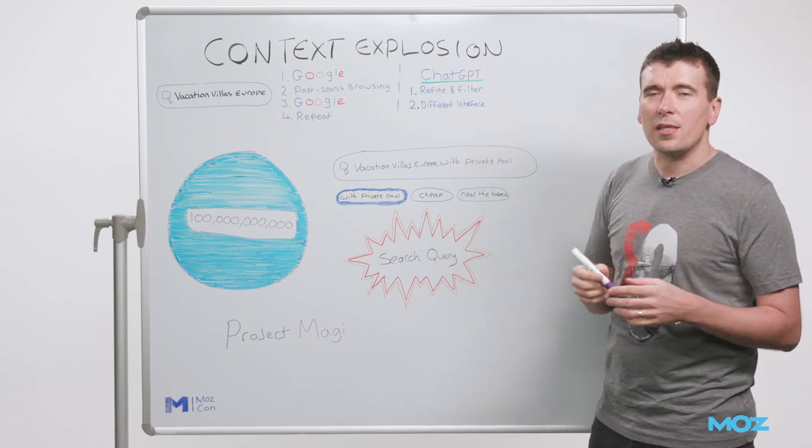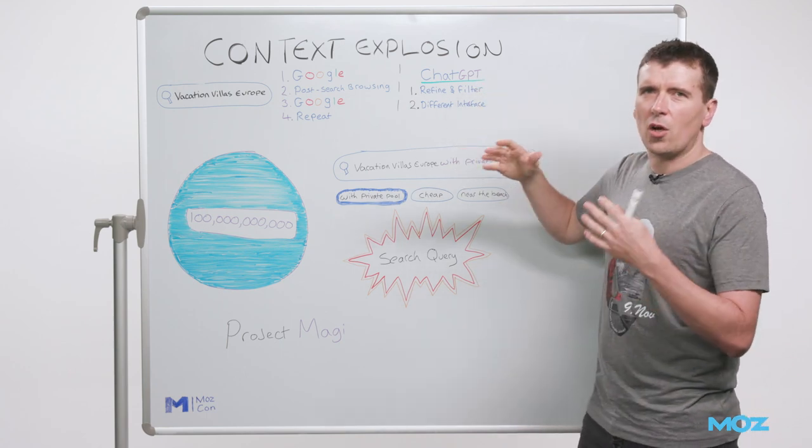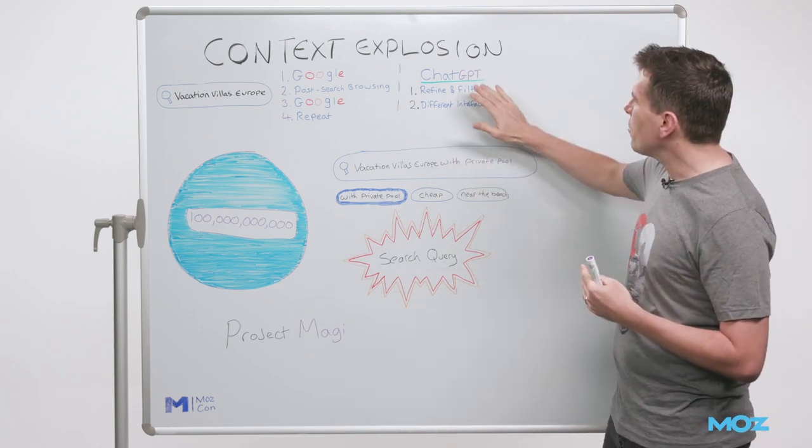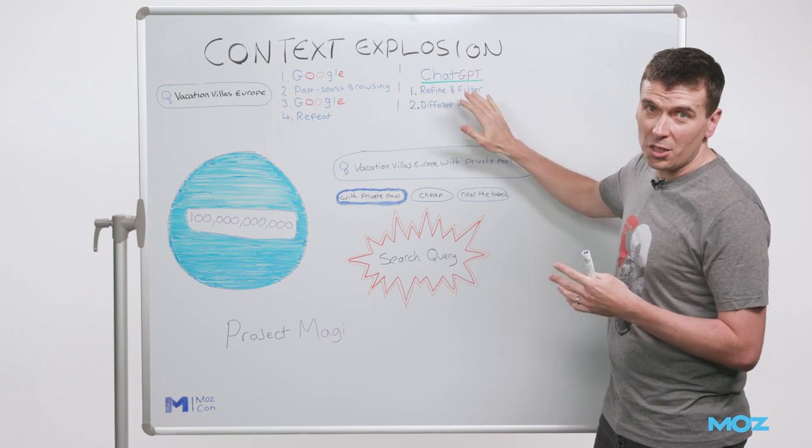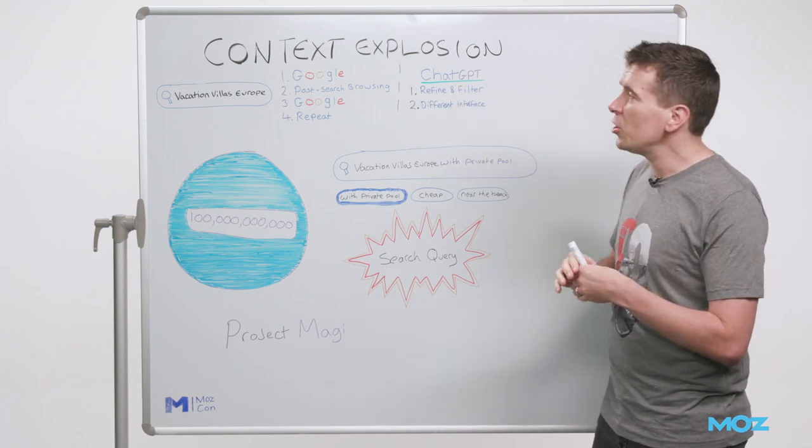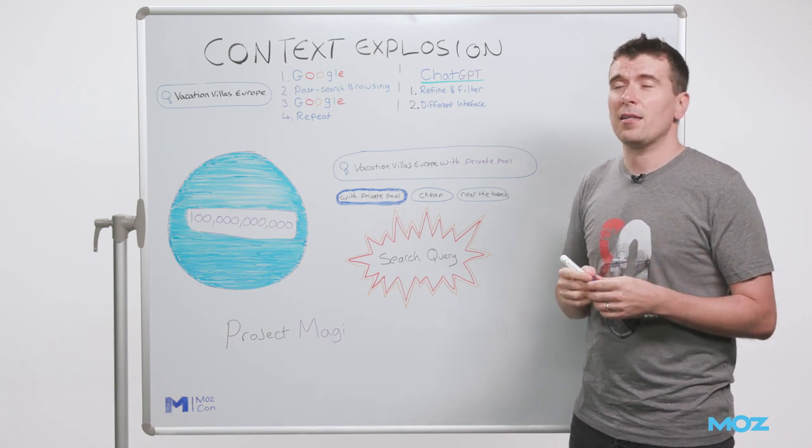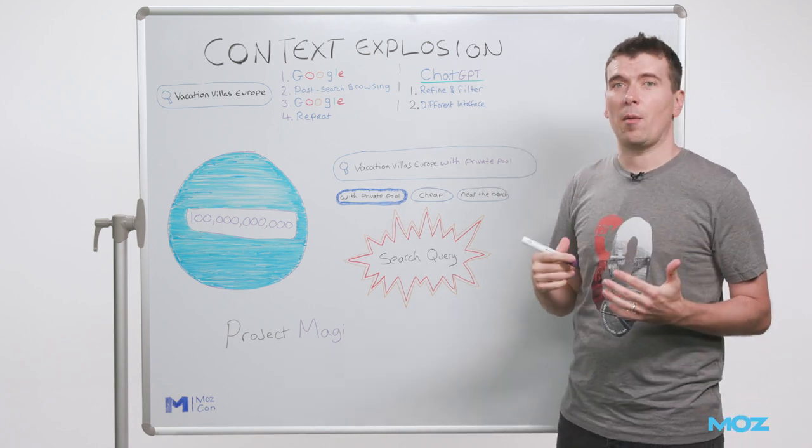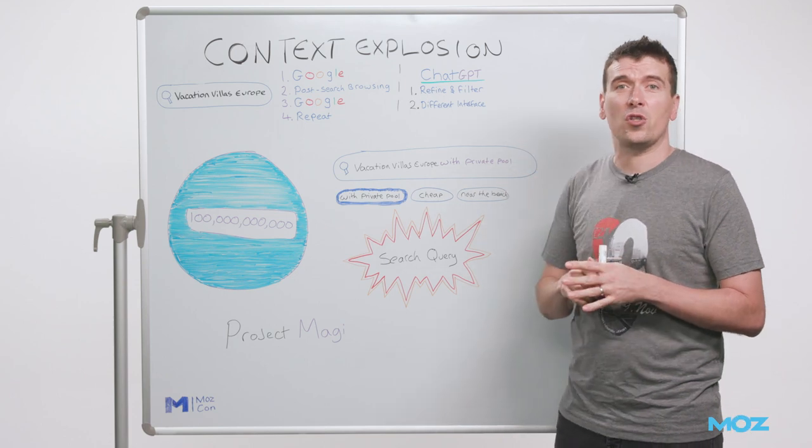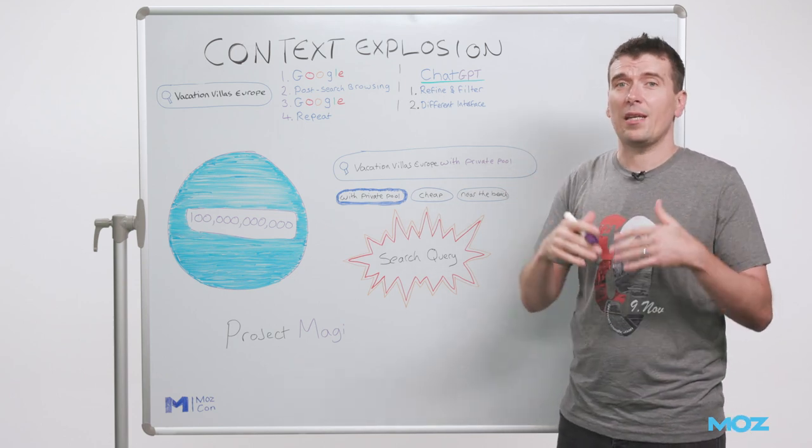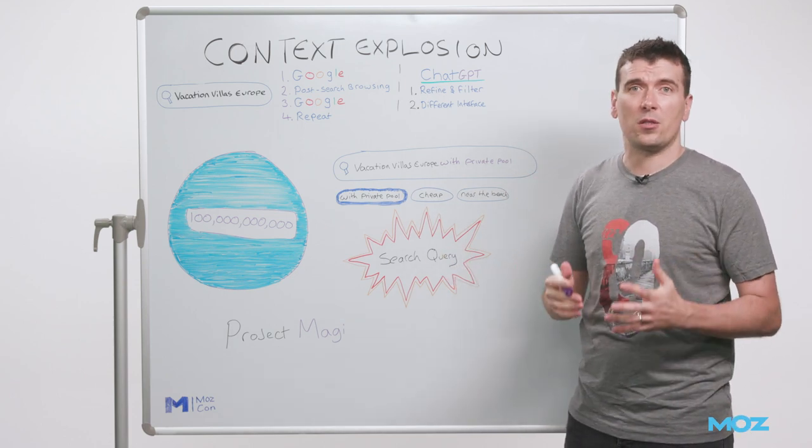And the good news is, all of the ability to understand context and filter comes from the GPT part of ChatGPT rather than the chat part. GPT, of course, stands for Generative Pre-trained Transformers. And whilst ChatGPT is an OpenAI product, GPTs themselves are just a type of large language model that are now out there in the world for anyone to use.